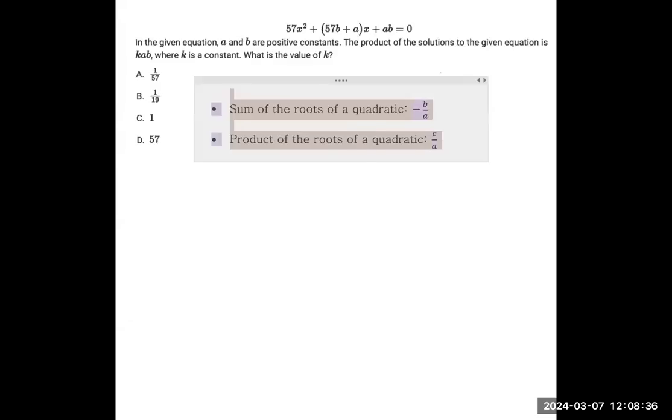This question is quizzing you on a couple of shortcuts that you may or may not know of. The sum of the roots of a quadratic is negative b over a, and the product of the roots of a quadratic is c over a.